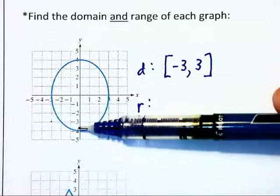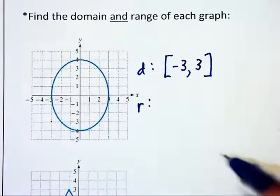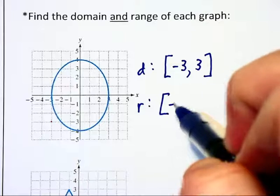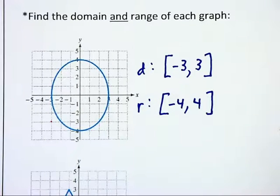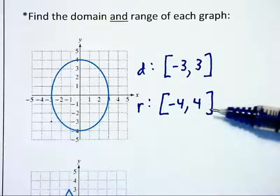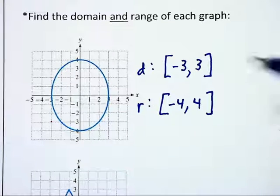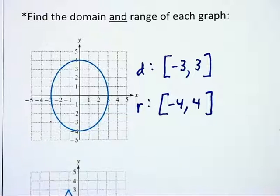For the range, the y values extend from negative 4 to positive 4 and that becomes the range, the closed interval from negative 4 to positive 4. And remember when I mention a closed interval, that means I am including both endpoints and using those squared brackets.